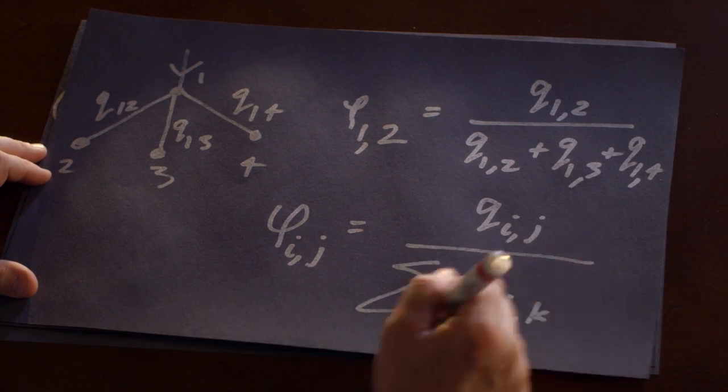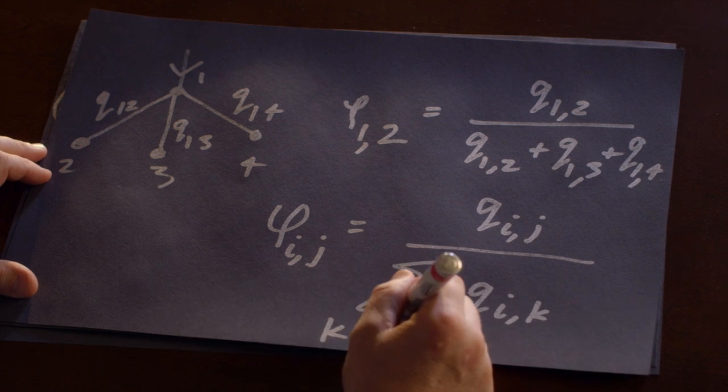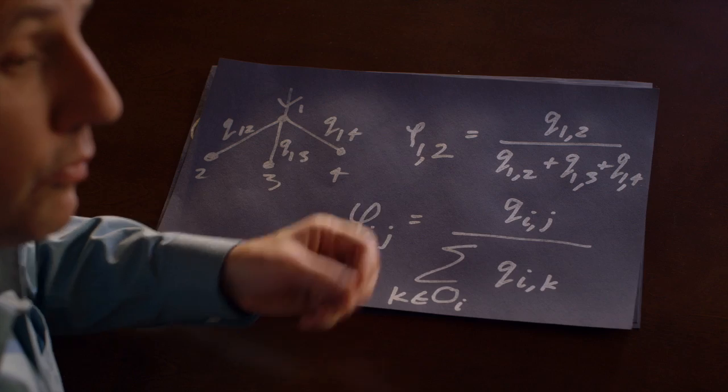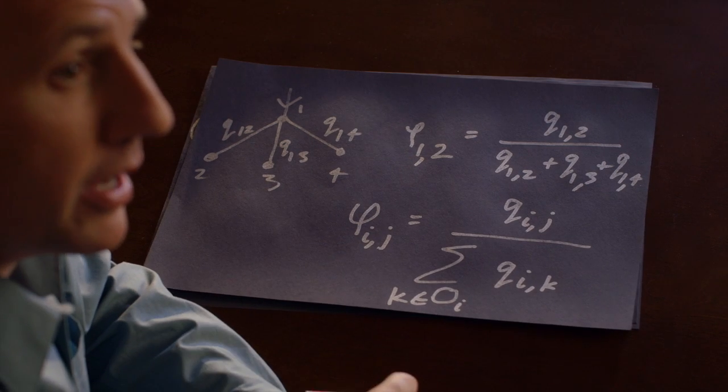And that's important. So it's important to note that the set O sub i is the set of all nodes for which the fluid is flowing out toward them. We're not interested in the nodes for which fluid is flowing into node i.